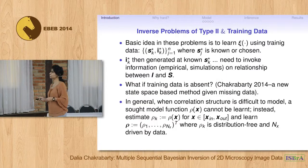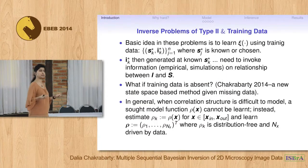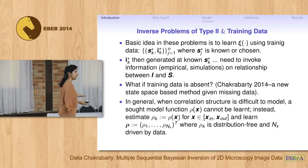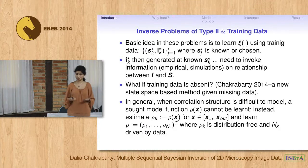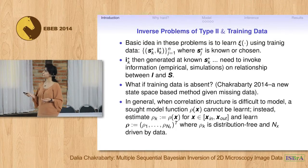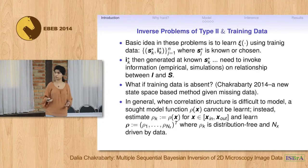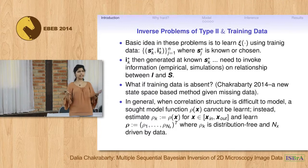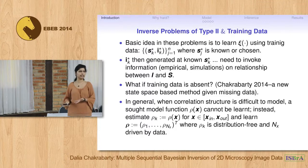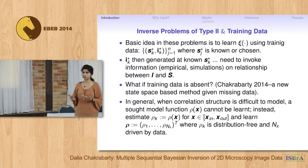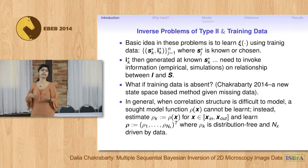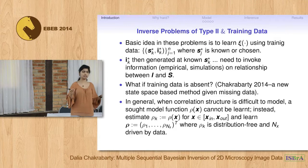All these methods are used to fit to training data. Training data comprises generated values of the observable I at chosen values of S — denoted with the S-star notation. The idea is to train a model for the unknown function using such training data, then invert it and operate on I to get an estimate of S. Of course, the underlying assumption is that the inverse exists.